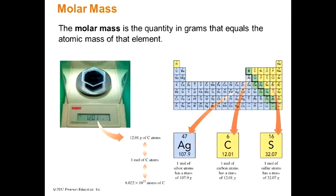A student asks: when using the periodic table on the test, does it have to be the one provided, since it doesn't show molar mass — or can we print one that has everything on it? The instructor confirms that a periodic table will be provided. Students may also scan one or use the periodic table in the front cover of the book, as long as they don't flip pages. Molar mass is in grams per mole.